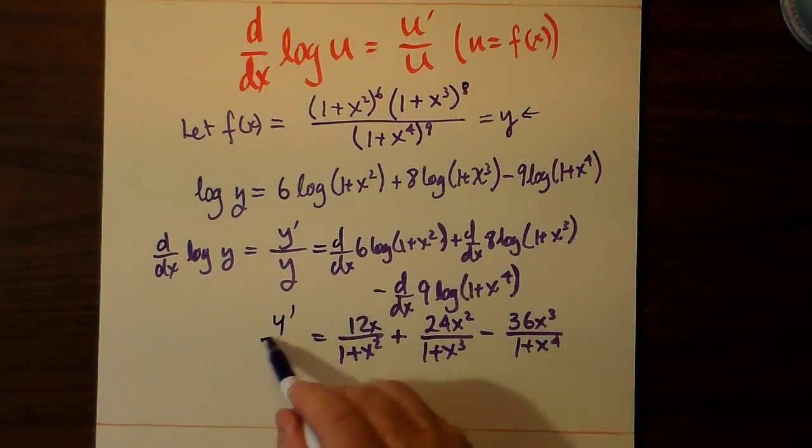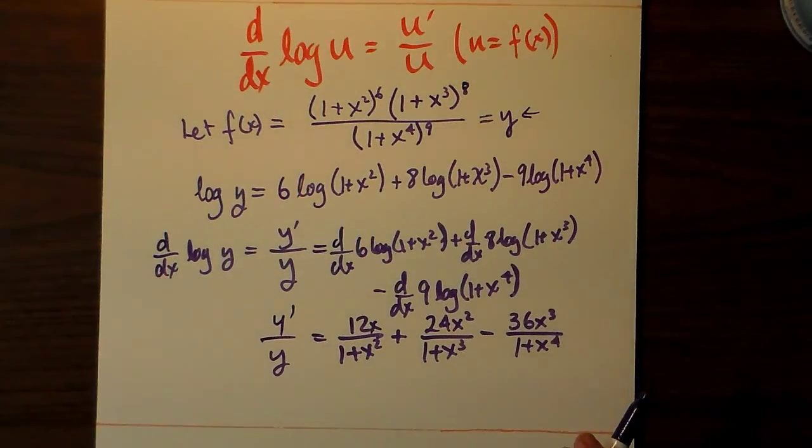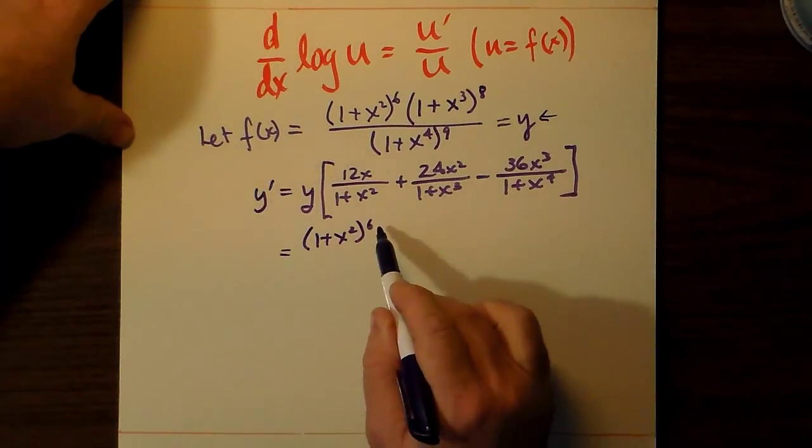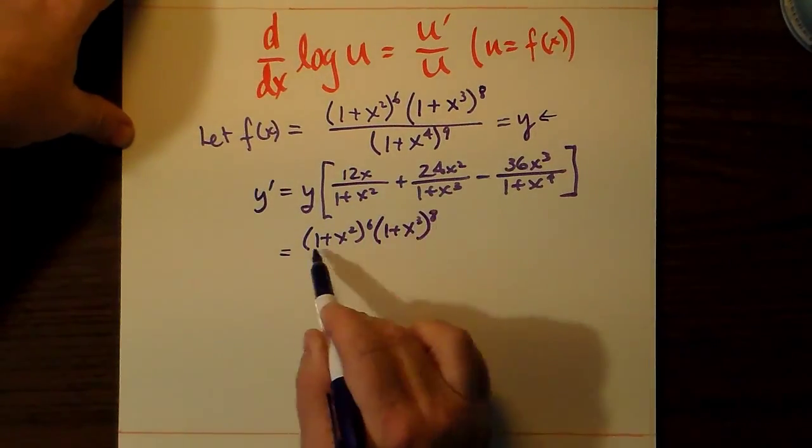Now remember, this is just y prime over y. Now we've got to multiply both sides by y, and we know what y is. Because it's right there near the top of the page.